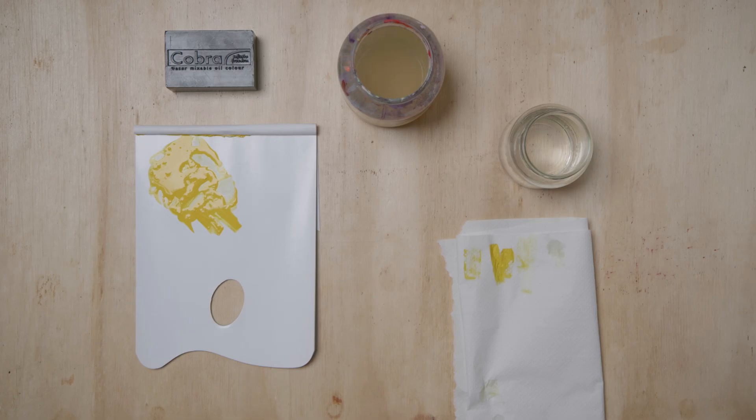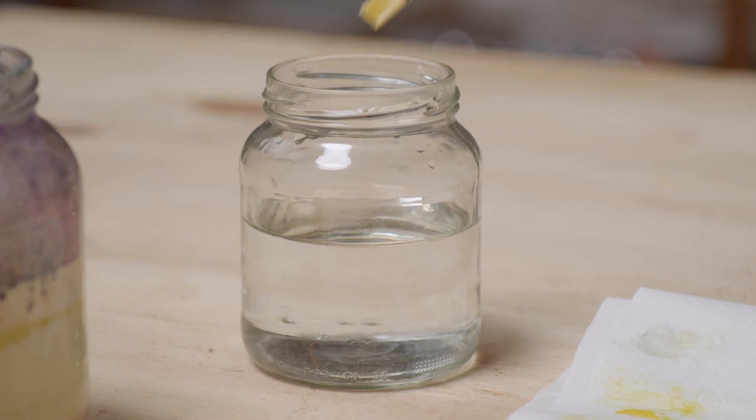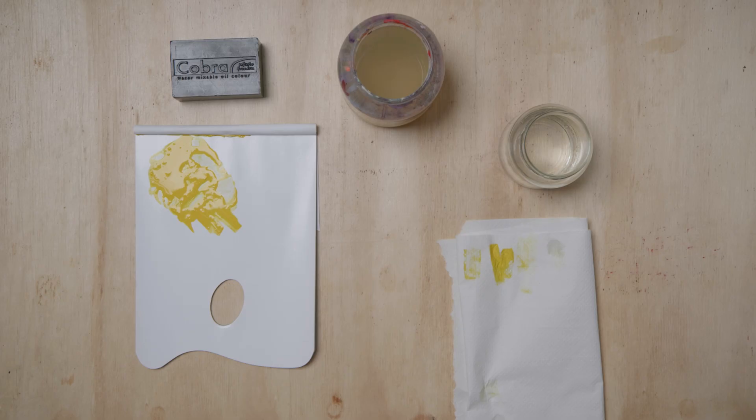You then rinse your brushes in water until almost all of the paint has been removed. This ensures that as little paint as possible goes down the sink.